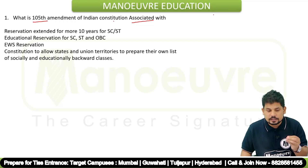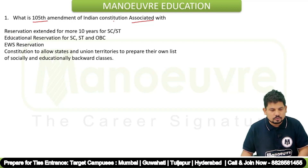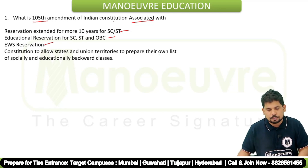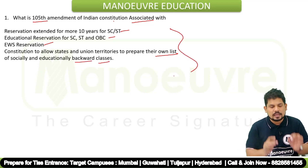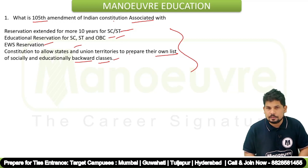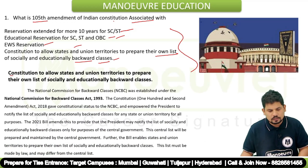The options are: reservation extended for more than 10 years for SC/ST; educational reservation for SC/ST and OBC; EWS (Economically Weaker Section) reservation; or the Constitution allowing states and union territories to prepare their own list of socially and educationally backward classes. The correct answer is the last option — states and union territories can prepare their own backward classes list.